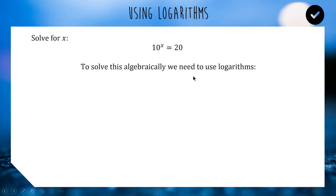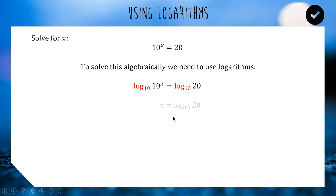We need to get x out of the power, because we want to end up with x equals something. We're trying to get rid of '10 to the power', so we do the inverse operation, which is log base 10. Because it's an equation, we do it on both sides. Log base 10 and 10 to the power are inverse operations — they cancel each other out and leave us with x. So our solution is x equals log base 10 of 20. This is something we can compute with a calculator. The answer is about 1.3, so 10 to the power of 1.3 gives you an answer pretty close to 20.